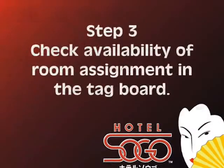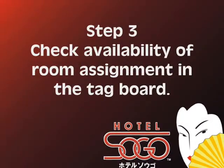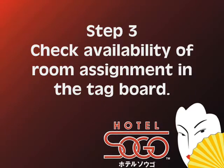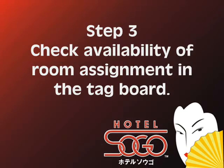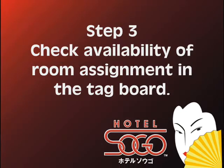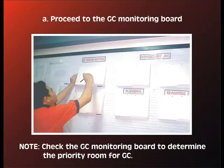Step 3: Check availability of room assignment in the tag board. Proceed to the general cleaning monitoring board. Note: Check the general cleaning monitoring board to determine the priority room for general cleaning.